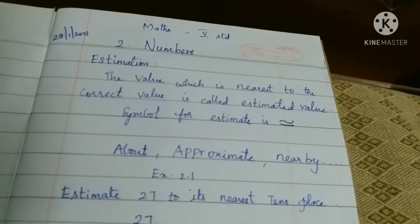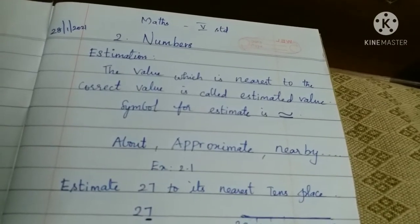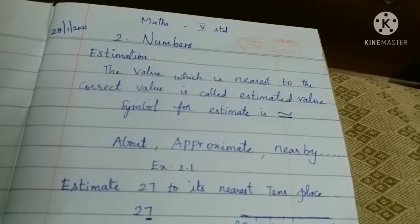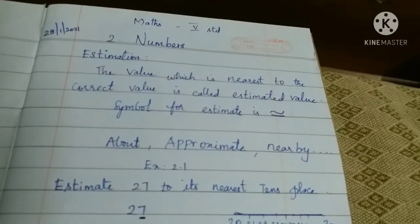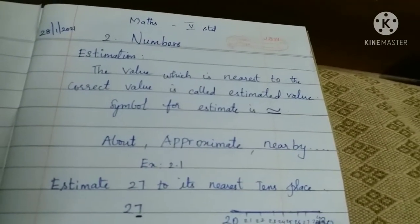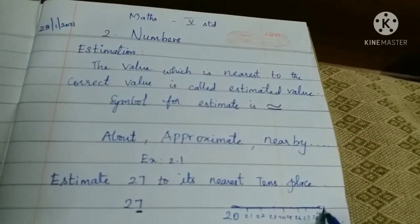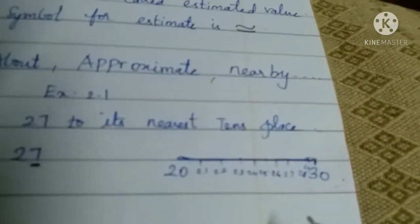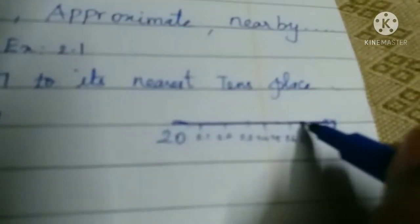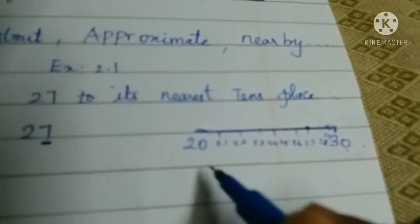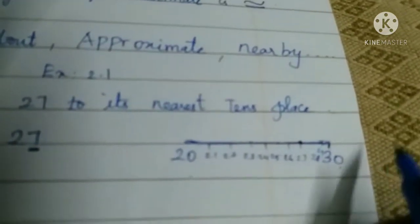On the number line from 20 to 30, we have 21, 22, 23, 24, 25, 26, 27, 28, 29, and 30. You can see where 27 sits. So which one is nearer — is 30 nearer or is 20 nearer to 27?